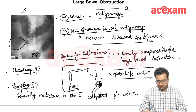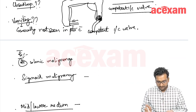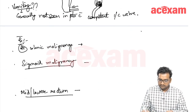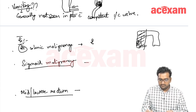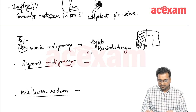Regarding treatment — since malignancy is the most common cause, I will describe the treatment of these malignancies. If there is a right colonic malignancy, we are going to do a right hemicolectomy with ileo-transverse anastomosis, where this ileum will be anastomosed with the transverse colon.